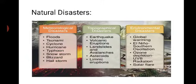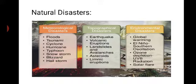Under natural disasters: meteorological disasters include floods, tsunami, cyclone, hurricane, typhoon, snowstorm, blizzard, and hailstorm. Topological disasters include earthquake, volcanic eruptions, landslides, avalanches, asteroids, and limnic eruptions. Environmental disasters include global warming, southern oscillations, ozone depletion, UVB radiation, and solar flare.